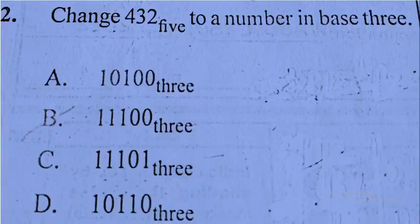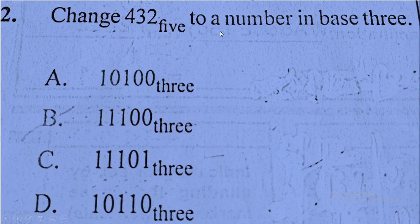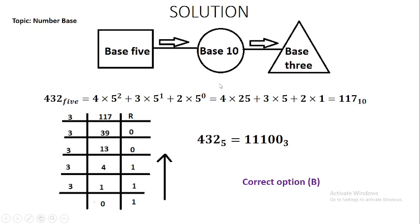Question number two: convert 432 base five to a number in base three. This is a number base question. We cannot move directly from base five to base three; we must first convert from base five to base ten using expansion, then from base ten to base three. We tag the digits from the back as positions 0, 1, 2, and expand.